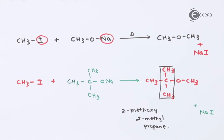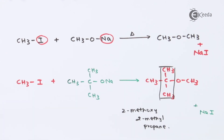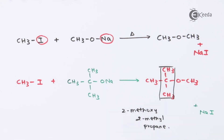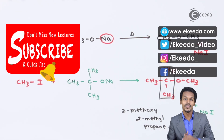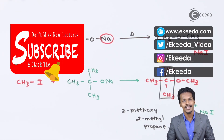So this is how we can prepare mixed ether. There is an advantage as well as a disadvantage of this method. Preparing a simple ether is a very simple process, but to prepare a mixed ether, the sodium alkoxide should consist of a higher number of carbon atoms while the alkyl halide should consist of a lower number of carbon atoms. Thank you for watching this video. I hope you have understood this clearly. Please subscribe to the channel.